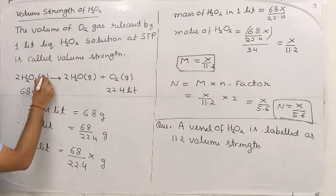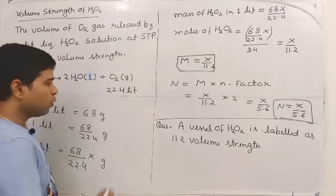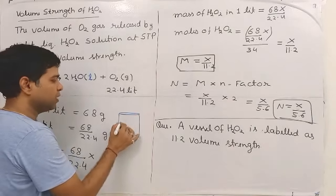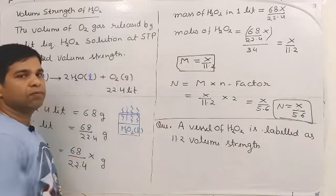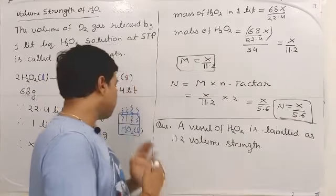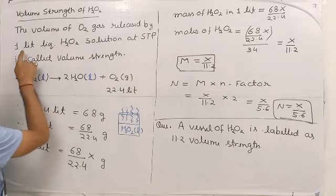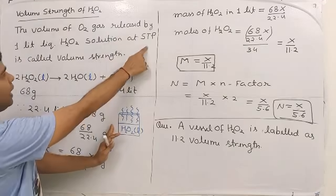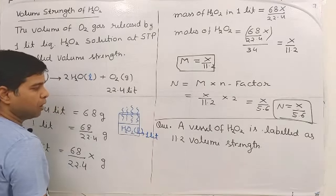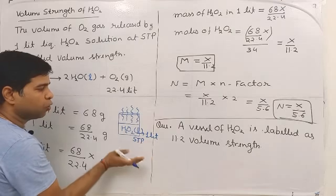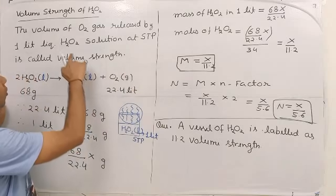2H2O2 (liquid) dissociates into 2H2O (liquid) plus oxygen gas. If we have a container in which H2O2 liquid is stored, oxygen gas is released slowly from this container. With that in mind, we define the volume strength of H2O2 as the volume of oxygen gas released by 1 liter of liquid H2O2 solution at STP. This is called the volume strength.